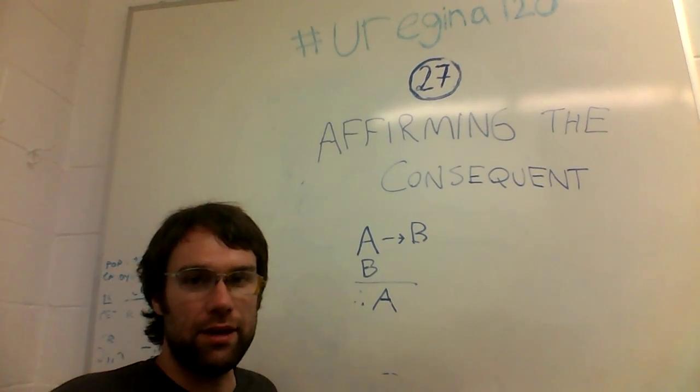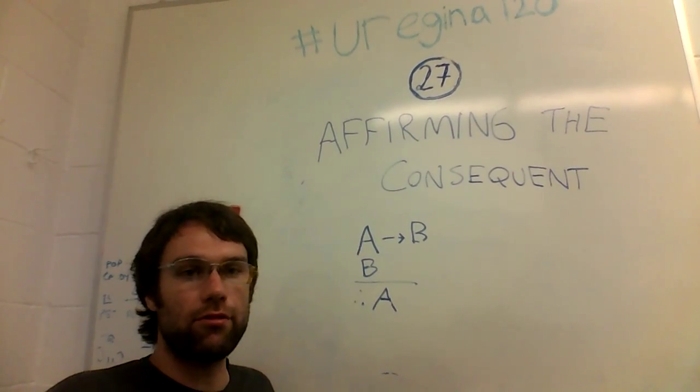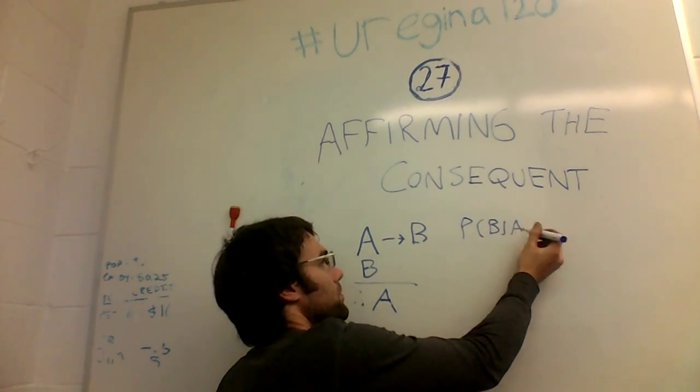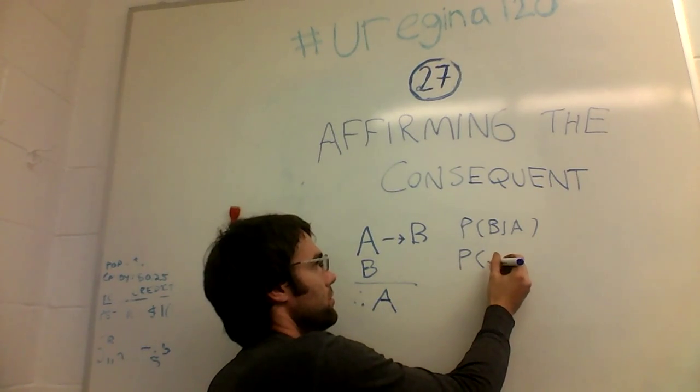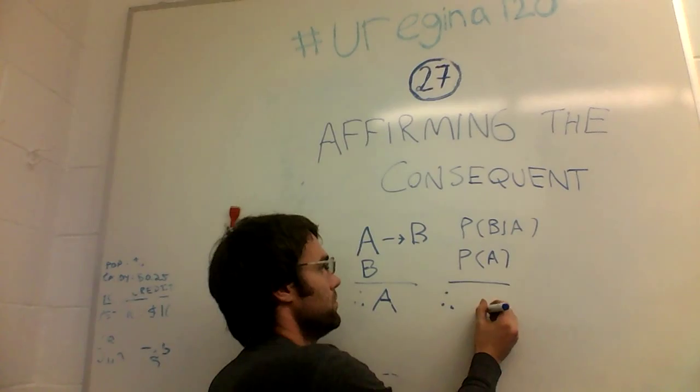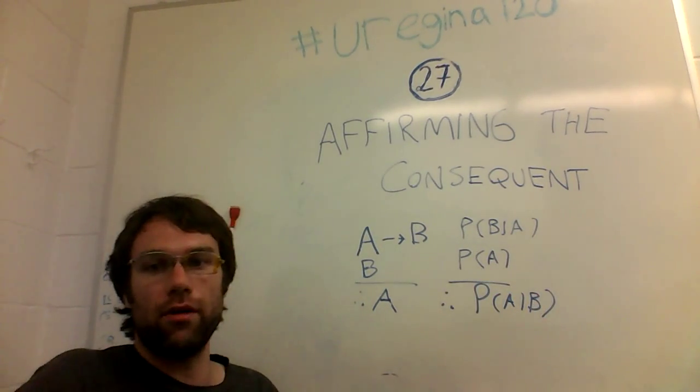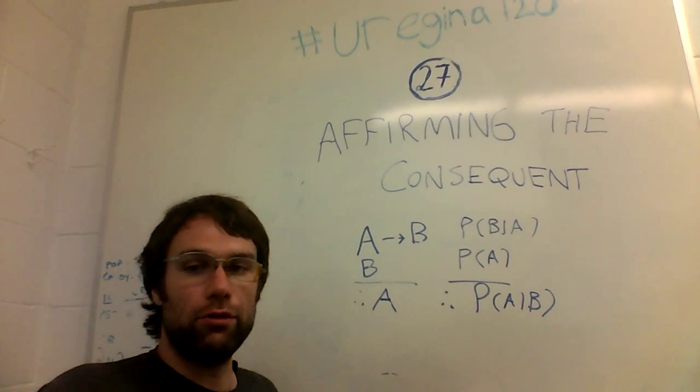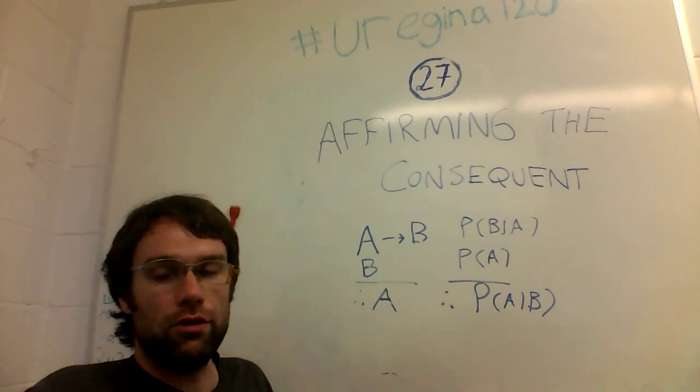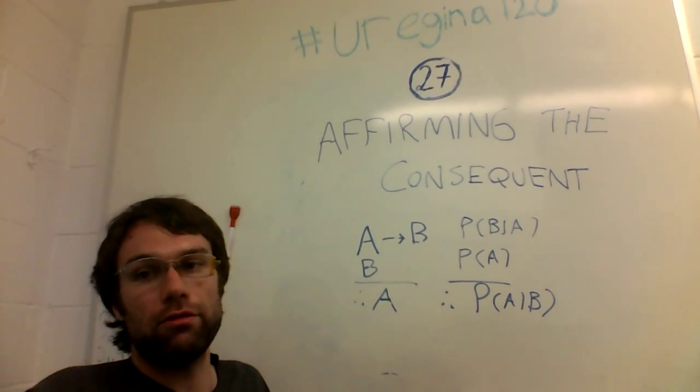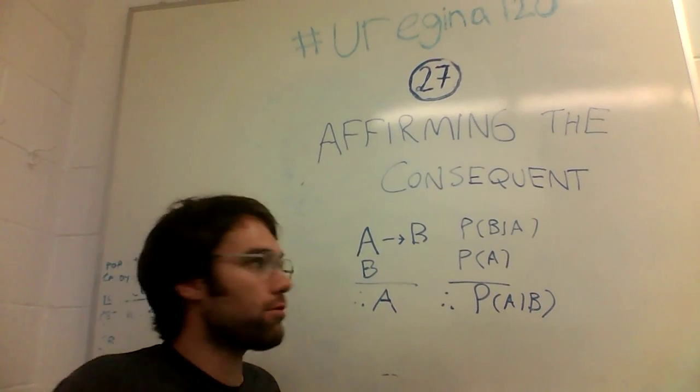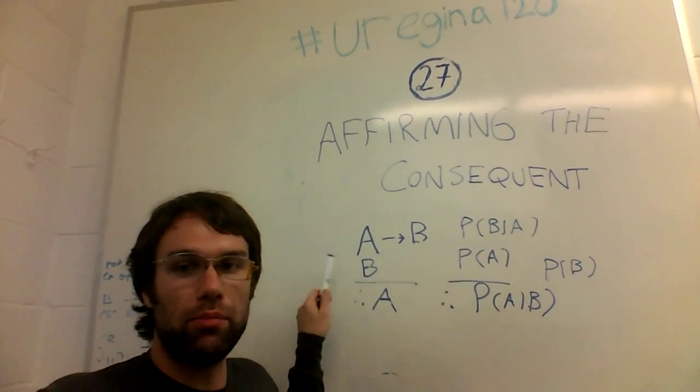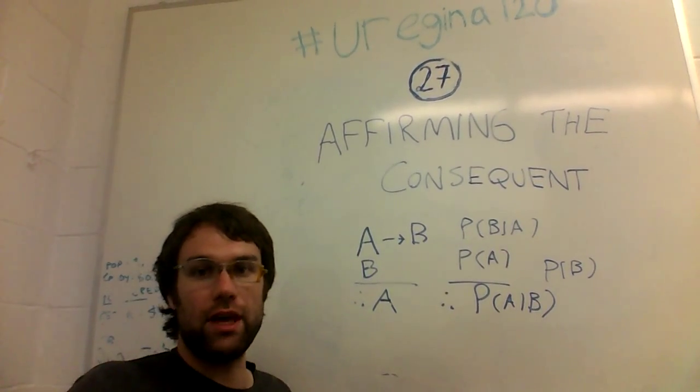And not only is it invalid in just basic propositional logic, but this is also true when dealing with probability as well. It's going to look something like this, where if you know the probability of B given A, and you know the probability of A, if you try to conclude that you also know the probability of A given B, you will be mistaken. You need a critical third piece of information, which is the probability of B. We're going to explain that in a later video.